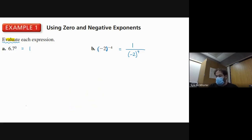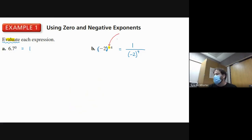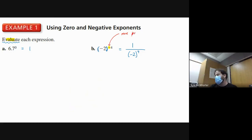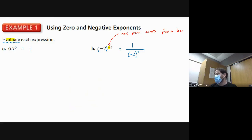One way to process a negative exponent and make the negative go away is to move the whole power across the fraction bar. If it was on top it goes to the bottom; if it was on the bottom it goes to the top. Moving the power across the fraction bar removes the negative sign.